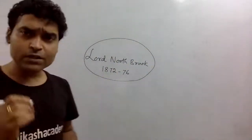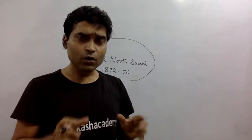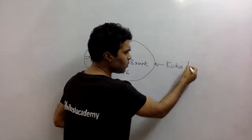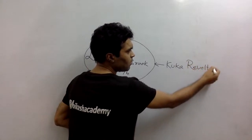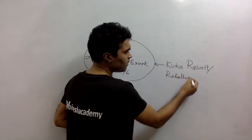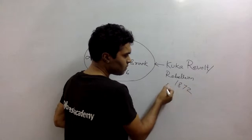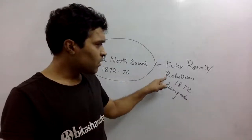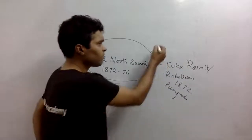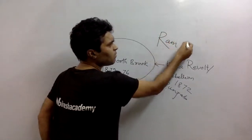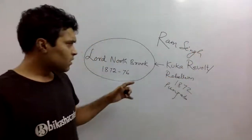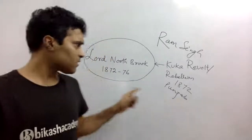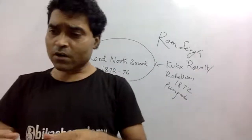During his tenure, the Kukka Rebellion took place in Punjab in 1872. You should remember that the leader of this movement was Ram Singh. So if the question is asked who was Viceroy during the time of the Kukka Rebellion in Punjab, the answer is Lord Northbrook.